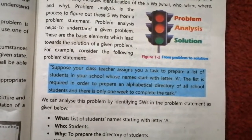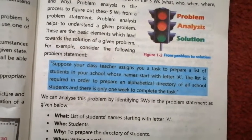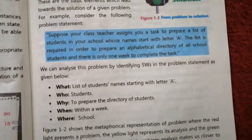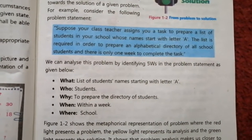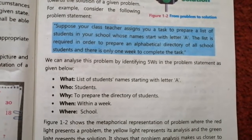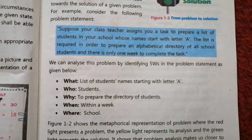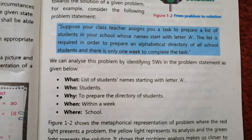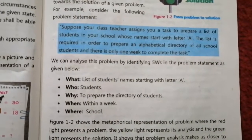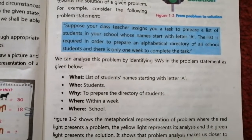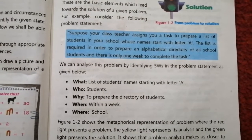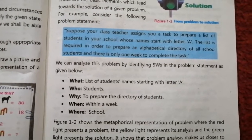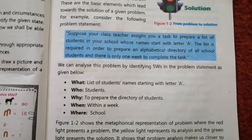What do you do? You will analyze the five W's. What task has been given? The list of student names starting with letter A. Who? Students. Why? To prepare the directory of students. When? One week. Where? School.